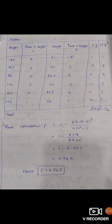Then we have to use the formula: rank correlation ρ = 1 - [6Σ(x-y)²]/[N(N²-1)]. So that is equal to 1 - 6 into, what is the Σ(x-y)² value? 16.